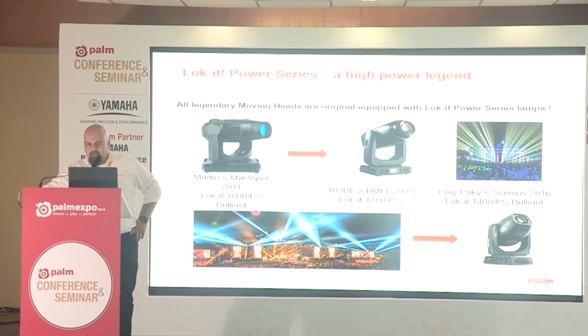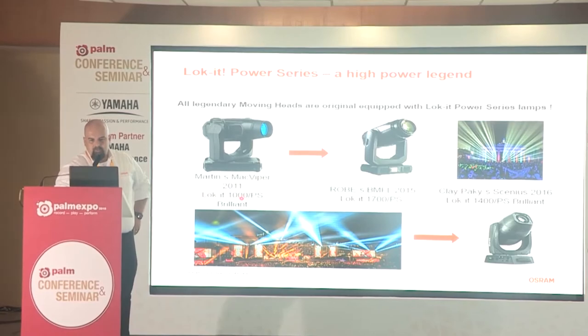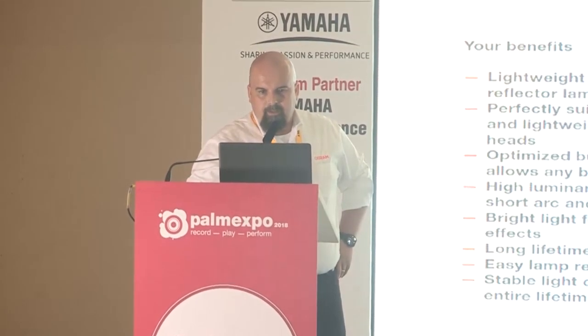A short history of Locket: the Locket 1000 W was made for Martin for the Mac Viper around 2011; in 2015 we made the Locket 1700 W for Robe; and in 2016 we made the 1400 W Brilliant for Seniors made by Clipaki. That gives you a picture of the history and the development on the fixture side.